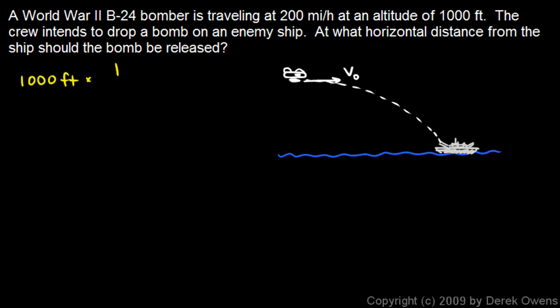1,000 feet times 1 meter per 3.281 feet. And the feet cancel. So 1,000 feet comes out to 305 meters.